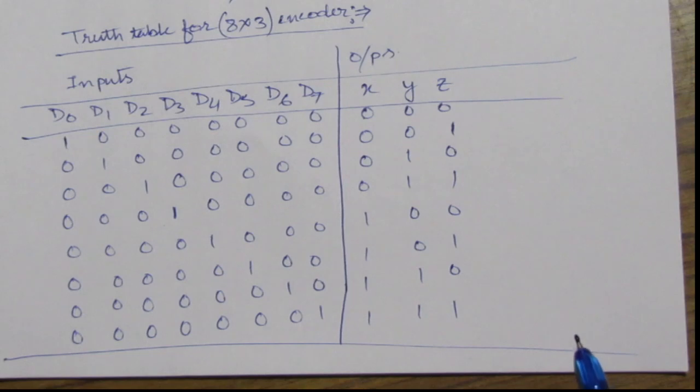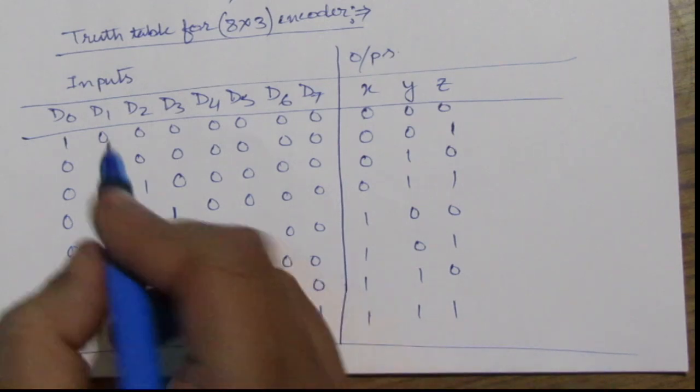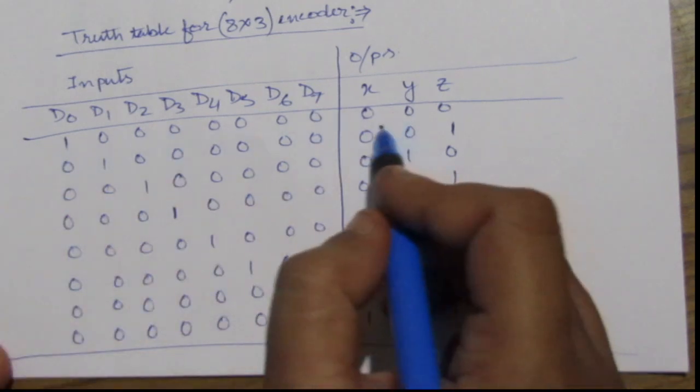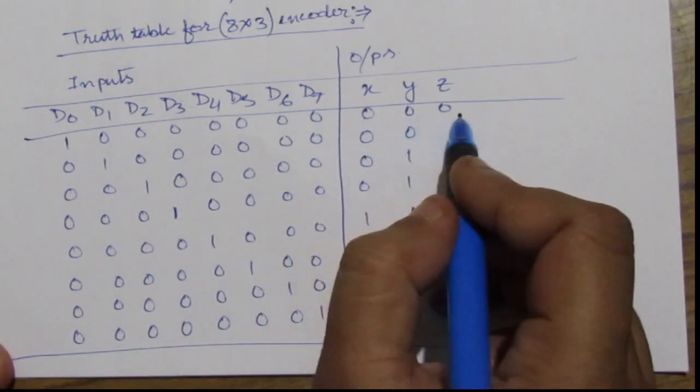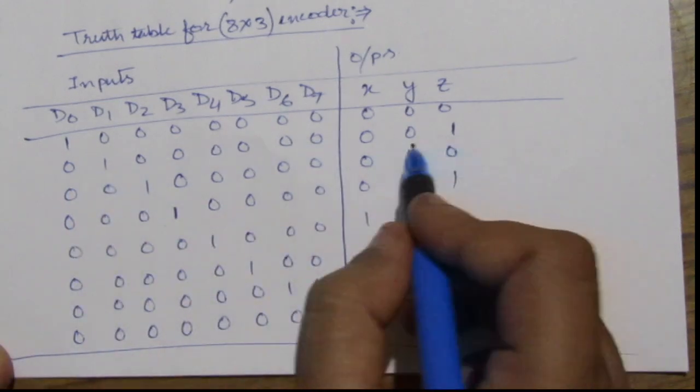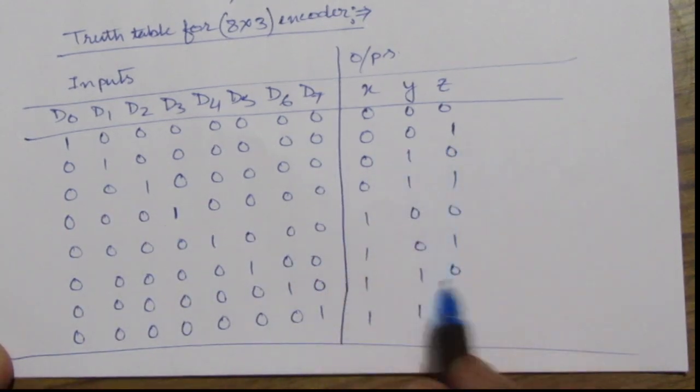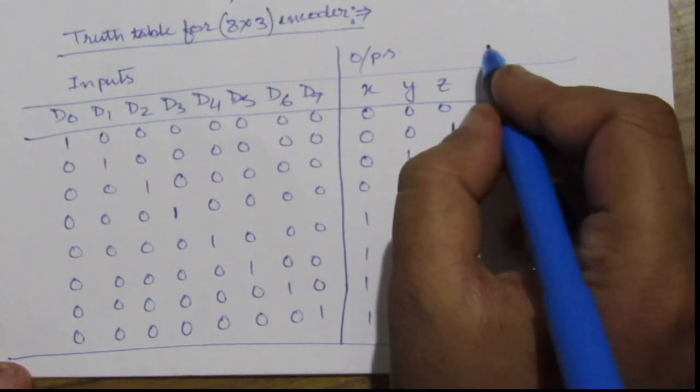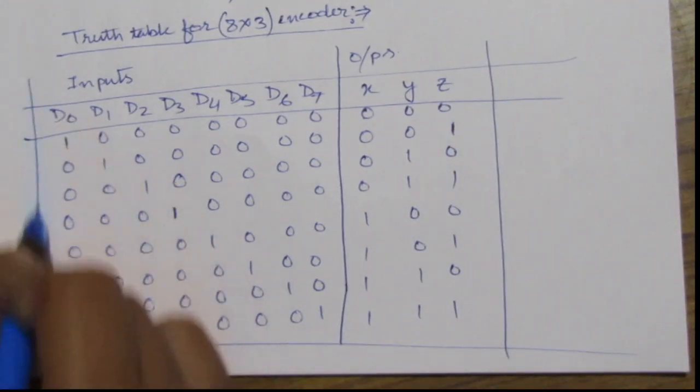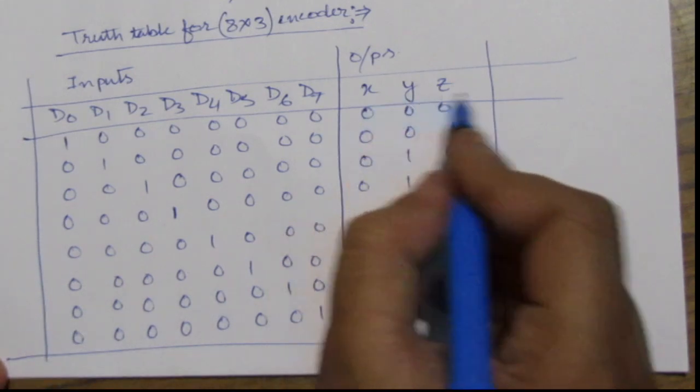So from here we can see that for the first input when this d0 is 1 we'll have x, y, z all of them are 0. When d1 is 1 then we have 001 and so on. So now we need to find an expression for these outputs x, y and z.